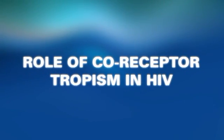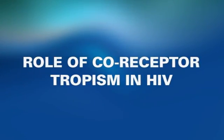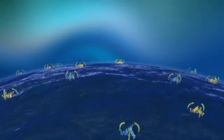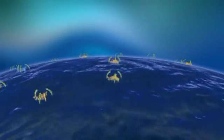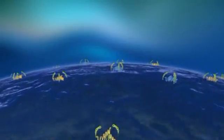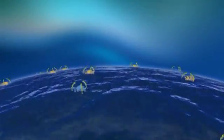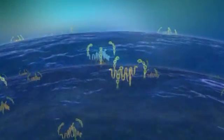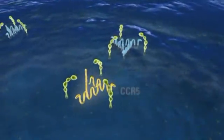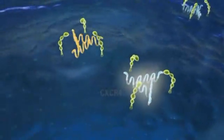The co-receptors to which HIV-1 can bind are part of the chemokine co-receptor family of proteins. The virus must bind to one of two chemokine co-receptors on the host CD4 T cell surface in order for infection to occur. These co-receptors are CCR5 or CXCR4.